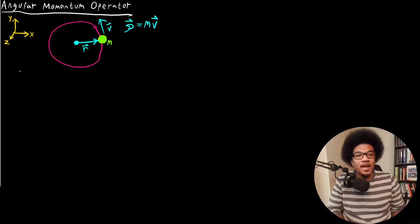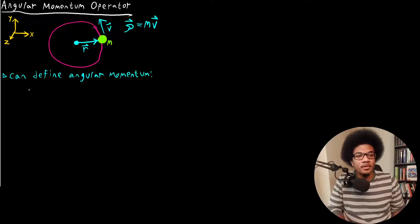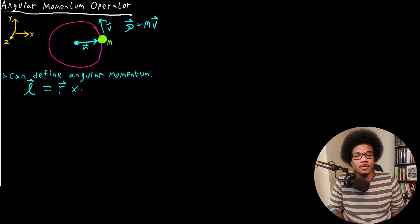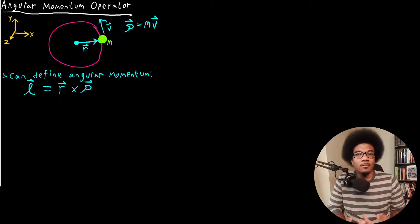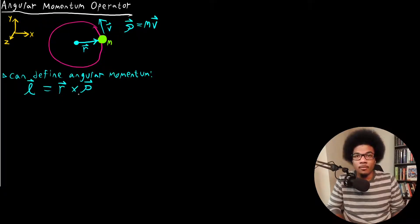so we can define the angular momentum in the following way. In quantum mechanics, we usually use the notation L for angular momentum. So we can have a vector for angular momentum that we define as the cross product between the position vector and the momentum vector — just like angular momentum would be position times momentum, we think of it as a cross product here.